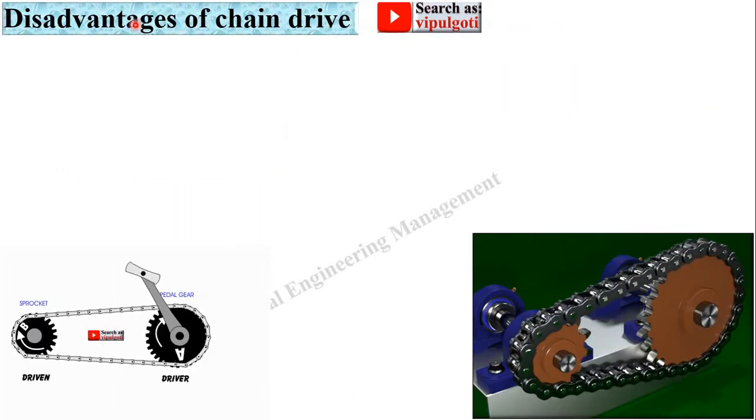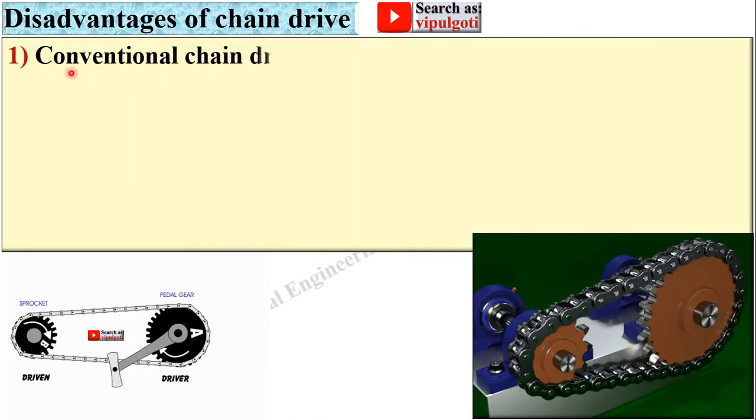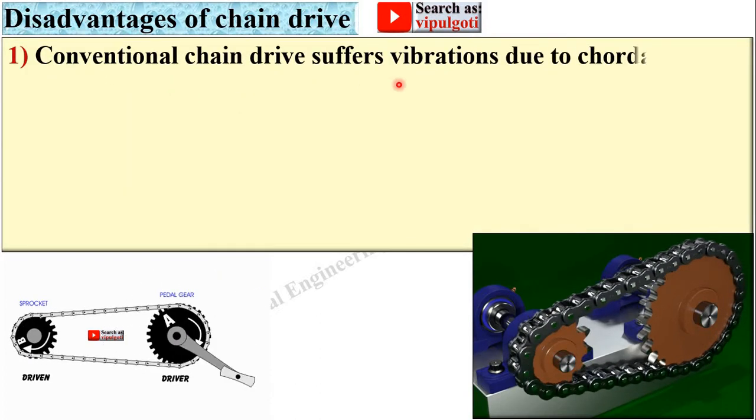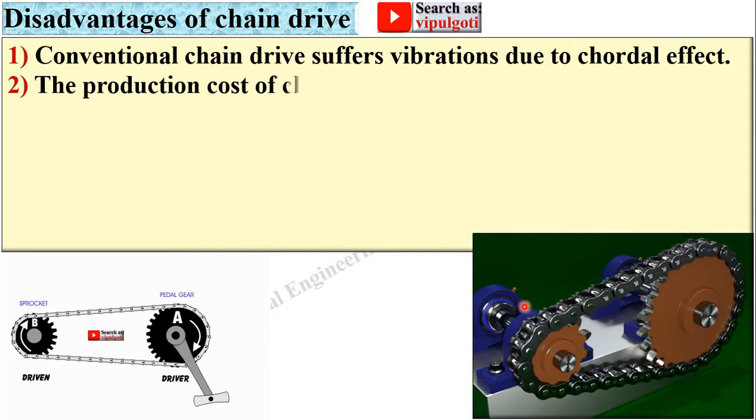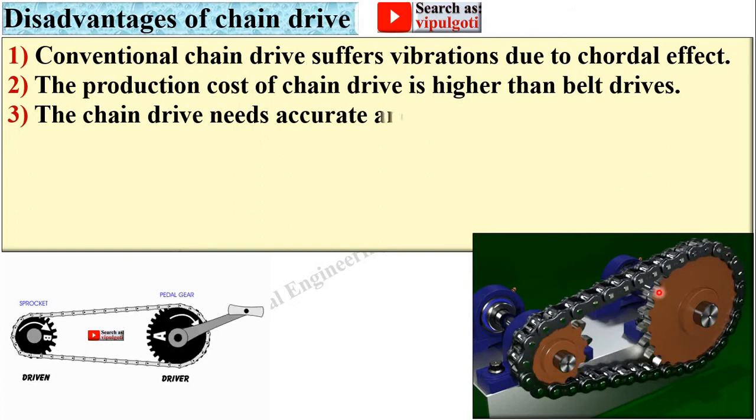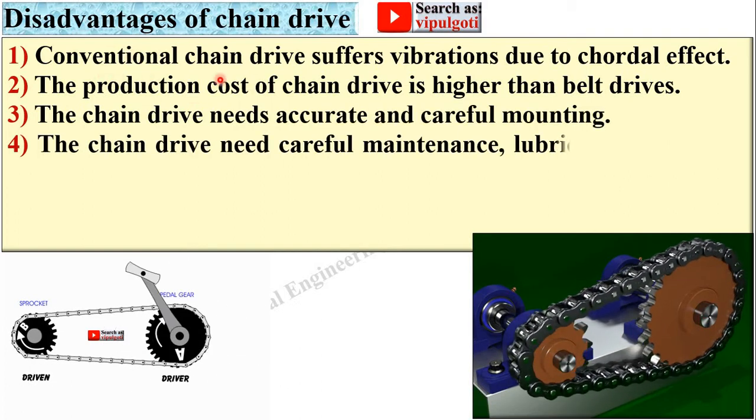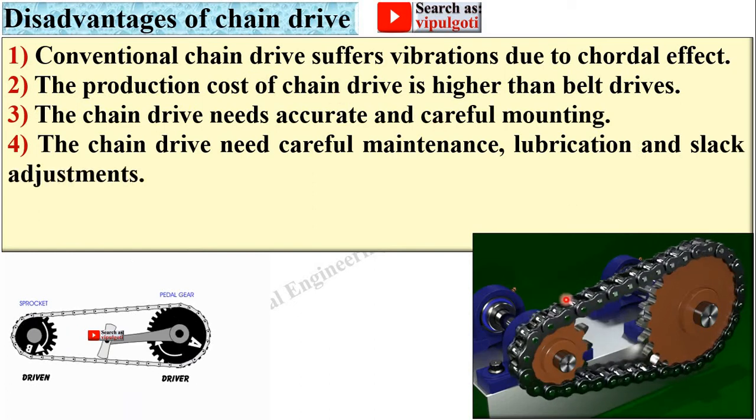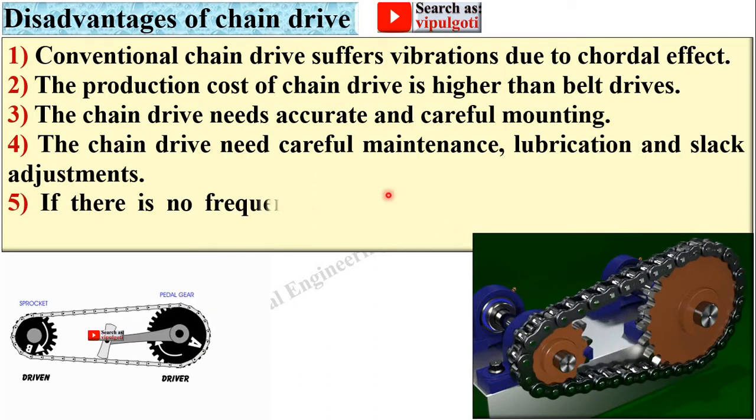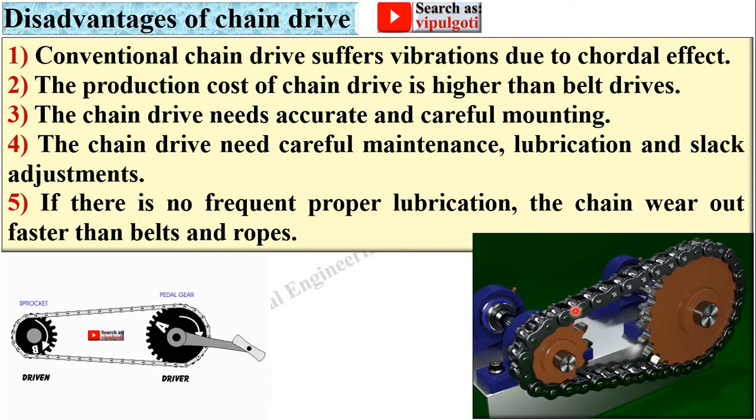Now next, disadvantages of chain drive. Conventional chain drive suffers vibration due to the chordal effect of the roller chain, particularly when the distance between the shafts is more. The production cost of chain drive is higher than belt drives. The chain drive needs accurate and careful mounting.